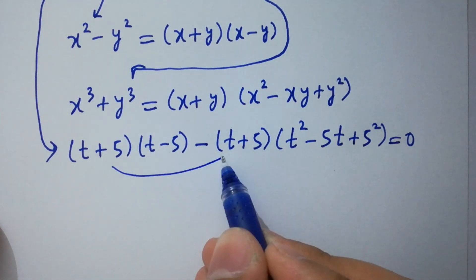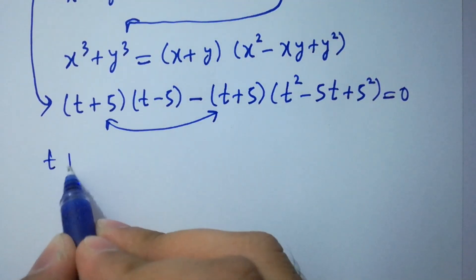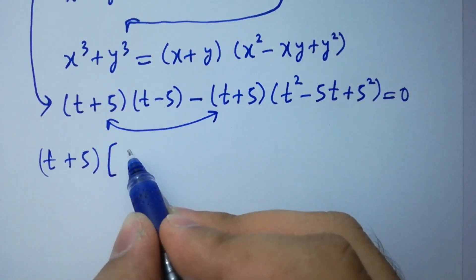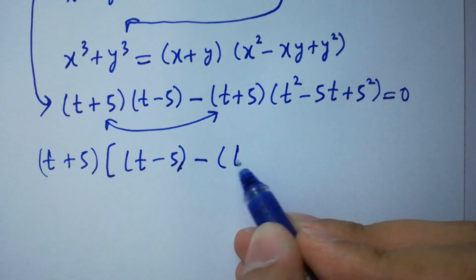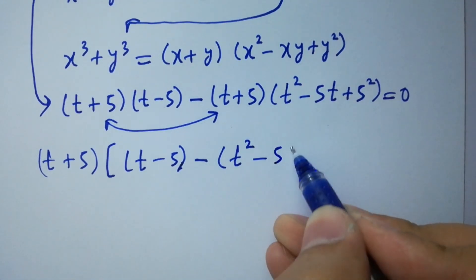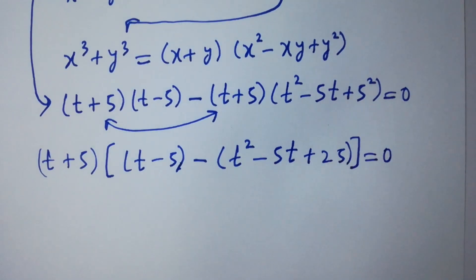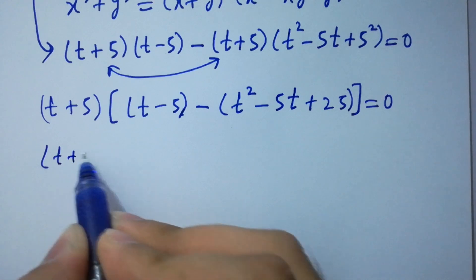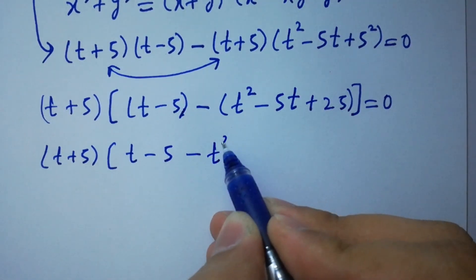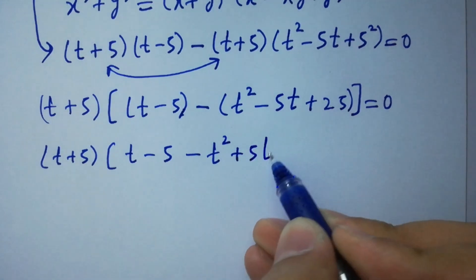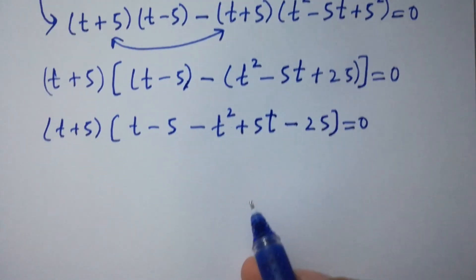So here t plus 5 is common. We have t plus 5, times the quantity: t minus 5, minus t squared minus 5t plus 25, equal to 0. Expanding the sign: t minus 5 minus t squared plus 5t minus 25, equal to 0.